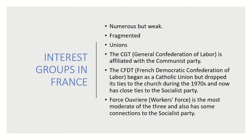Interest groups in France are numerous but weak and fragmented. The most powerful ones tend to be the unions. The strongest, the CGT (General Confederation of Labor), is affiliated with the Communist Party. The CFDT (French Democratic Confederation of Labor) began as a Catholic union but dropped its ties to the Church in the 1970s and now has closer ties to the Socialist Party. The Workers' Force is the most moderate of the three but also has connections to the Socialist Party. This is going to become important because if we're talking about determinism and structuralism, we're really talking about socialism and the effect of Marx on socialist ideology.